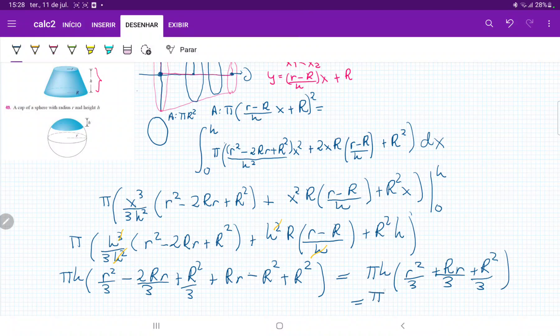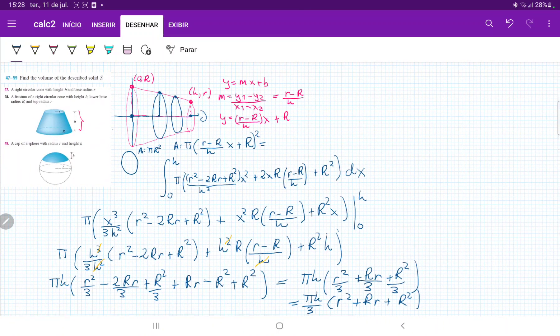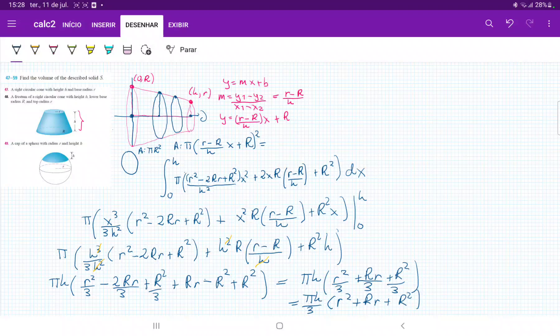Which is just equal to pi h over 3, times little r squared, plus capital R little r, plus capital R squared, and that's what we get, that's the volume of the frustum of this right circular cone, when we take the line that connects these two points, the end of the circles, and then we revolve it about the x-axis.